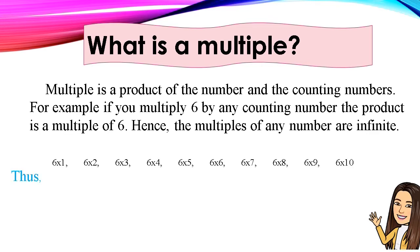Thus, 6 times 1, 6 times 2, 6 times 3, 6 times 4, 6 times 5, 6 times 6, 6 times 7, 6 times 8, 6 times 9, 6 times 10, or we have 6, 12, 18, 24, 30, 36, 42, 48, 54, and 60 are the multiples of 6.